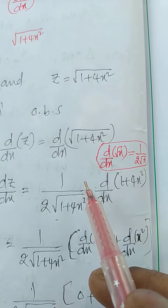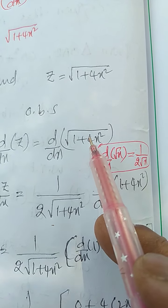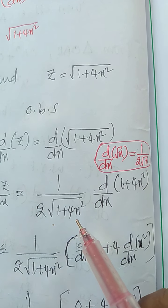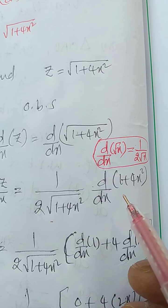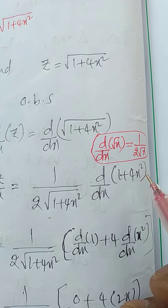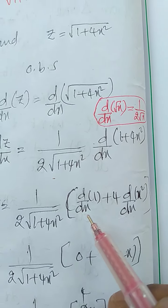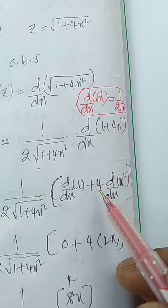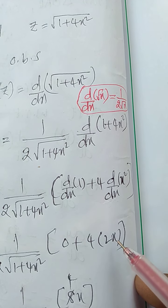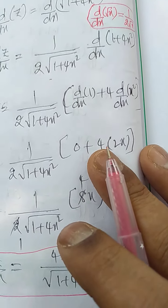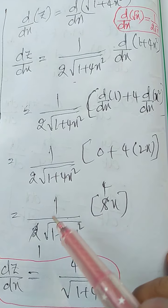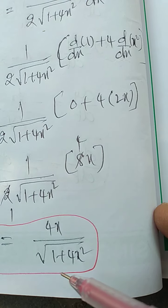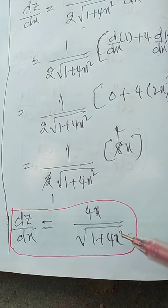The given function is in the form of derivative of √x, where 1 + 4x² is treated as x. So we can write it as 1/(2√(1 + 4x²)) multiplied by the derivative of 1 + 4x². Differentiation of a sum equals the sum of the differentiation: derivative of 1 is 0, plus 4 into derivative of x² is 4 into 2x = 8x. Therefore 0 + 8x = 8x. So dz/dx = 4x / √(1 + 4x²).